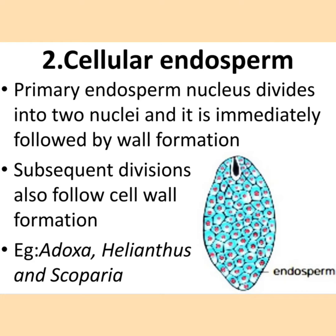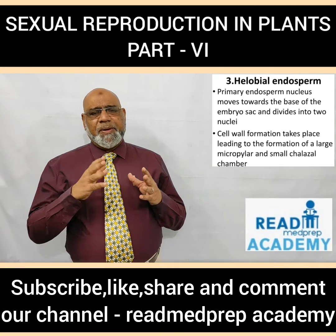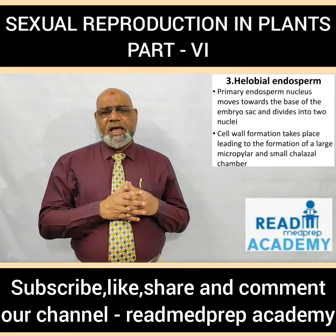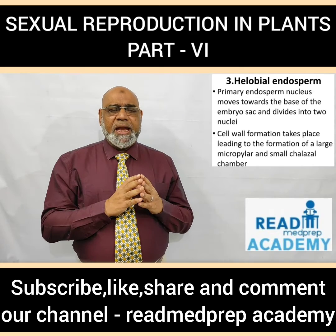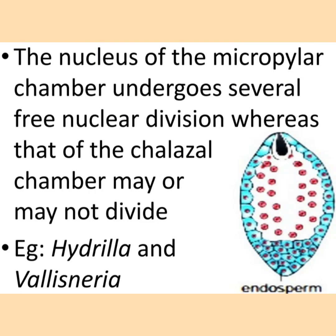Examples of cellular endosperm include Adoxa, Helianthus, and Scoparia. In helobial endosperm, the primary endosperm nucleus moves towards the base of the embryo sac and divides into two nuclei with cell wall formation, leading to a large micropylar chamber and a small chalazal chamber. The micropylar chamber nucleus undergoes several free nuclear divisions, whereas the chalazal chamber may or may not divide or may become cellular. Examples include Hydrilla and Vallisneria. In the image you can see the nuclear part near the micropylar region and a cellular part in the chalazal region.